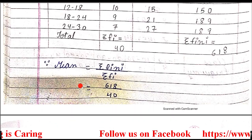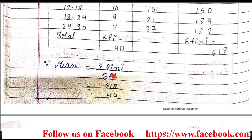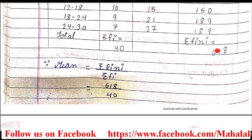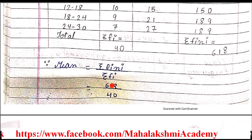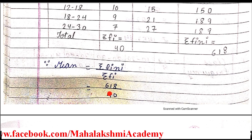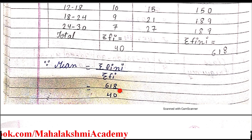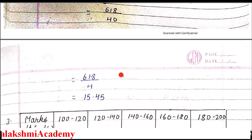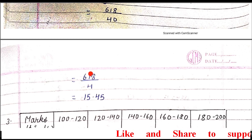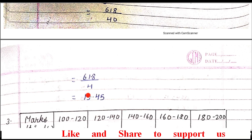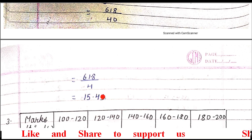Since we have to find out the mean, the mean formula is sigma fi·xi upon sigma fi. The sigma fi·xi value is 618 and sigma fi value is 40. After substituting their values from the table and dividing, we get the answer 15.45. After canceling the zero, we get 61.8 divided by 4, and orally dividing 61.8 by 4 gives the mean as 15.45.